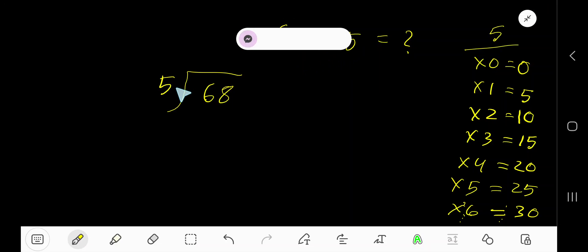68 divided by 5. Here 5 is a divisor. So we need multiplication table of 5.